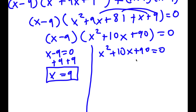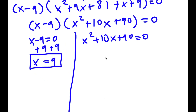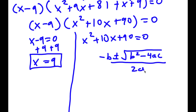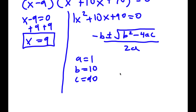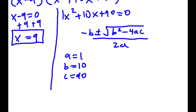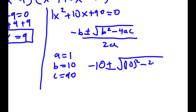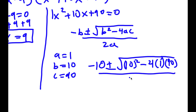For x squared plus 10x plus 90 equals 0, we're going to use the quadratic formula: negative b plus or minus the square root of b squared minus 4ac, all divided by 2a. In this case a equals 1, b equals 10, and c equals 90. Plugging in, I have negative 10 plus or minus the square root of 10 squared minus 4 times 1 times 90, all divided by 2 times 1.